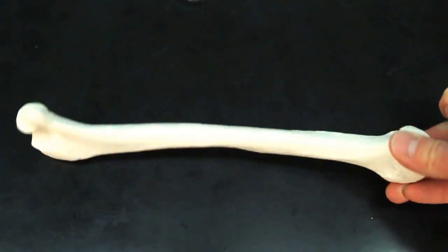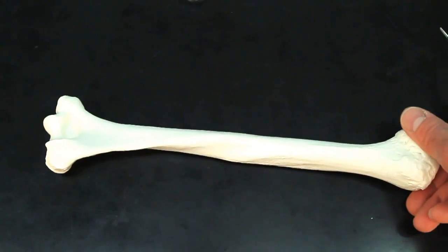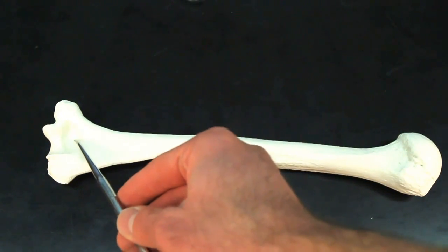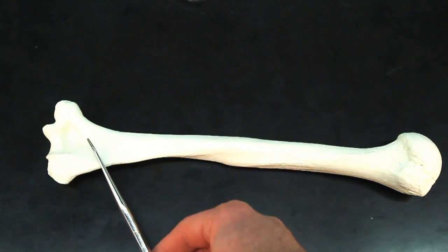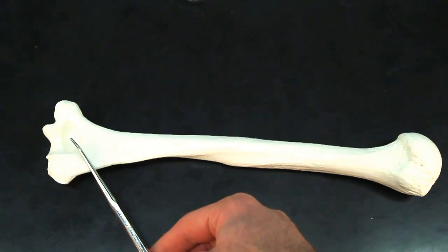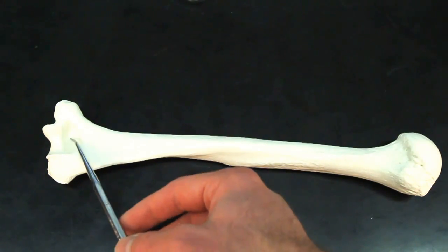Now, if we flip over to the posterior side, we're going to see this larger indent back here. This larger indent is going to be the olecranon fossa.